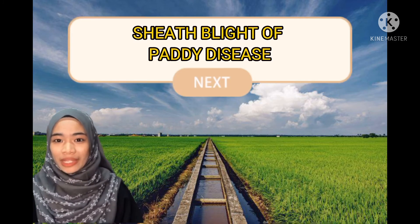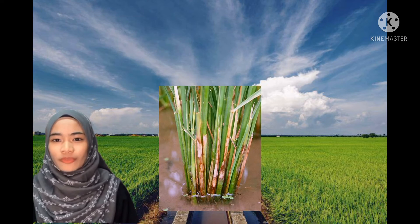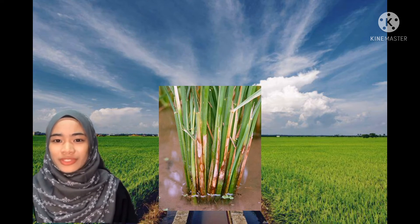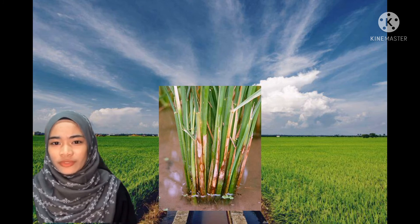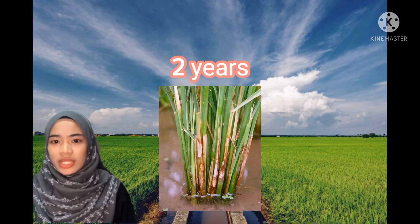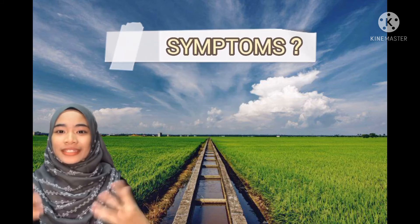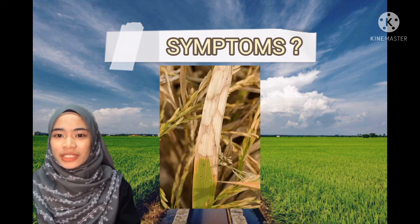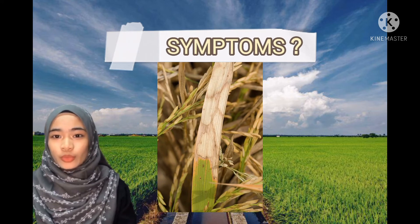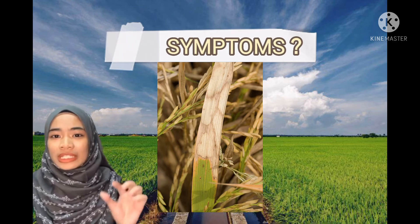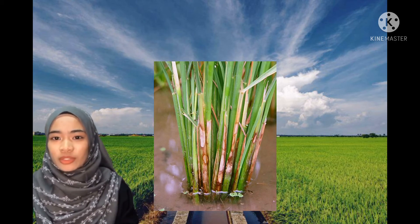The last disease is seed blight of paddy. The causal organism of the seed blight is Rhizoctonia solani. This fungus is capable of surviving in the soil as sclerotia or dormant mycelium during unfavorable conditions for over 2 years. Subsequently, the sclerotia in the soil thicken during land preparation or regular irrigation. Initially, oval or elongated soiled greenish grey lesions measuring 1–3cm in length appear on the leaf sheath close to the soil or stagnant water.